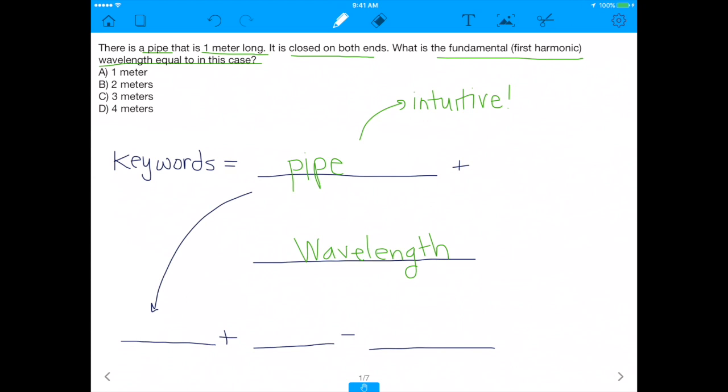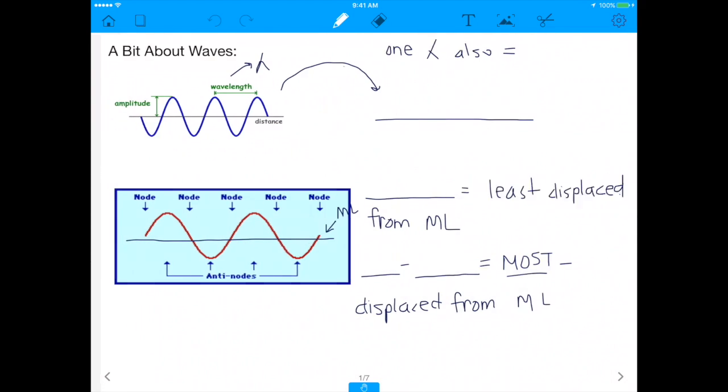Alright, another thing that's going to happen is anytime you see the word pipe, even though it's not going to be mentioned, another thing you should be thinking of is this thing called a node and this thing called an anti-node, and you're going to see what I mean by that. But let me show you right now, because we're going to get into the basics of what a node and an anti-node is.